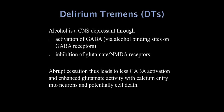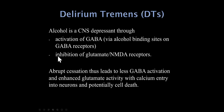Next is delirium tremens, or DTs, due to alcohol withdrawal. Alcohol is a potent CNS depressant — it enhances GABA (there's actually a binding site on GABA for alcohol) and also inhibits glutamate activation of NMDA receptors. When a chronic alcoholic abruptly stops — or even significantly cuts back — we get exactly the opposite: inhibition of GABA and too much glutamate with excessive activation of NMDA receptors, which can lead to calcium entry into neurons and potentially neuronal death.